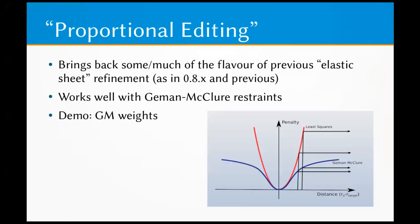More recently, proportional editing has been added into the real space refinement. It brings back, at least to my mind, some of the flavour of the previous elastic sheet refinement from 0.8 and before. With Gaiman-McClure restraints, the way the molecule moves with different weighting schemes can be adjusted by changing the Gaiman-McClure weights, and I have a video of that.